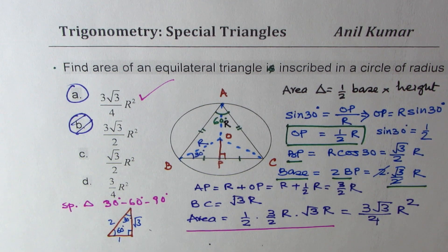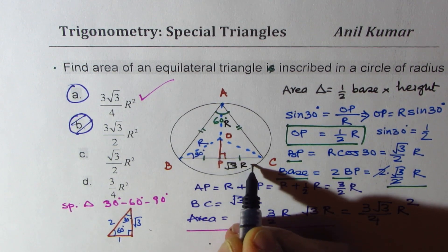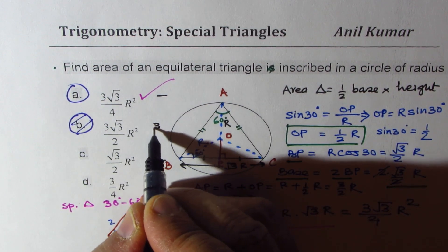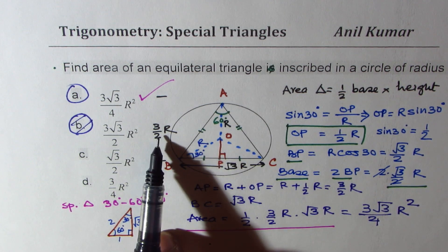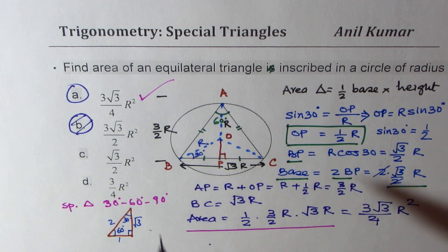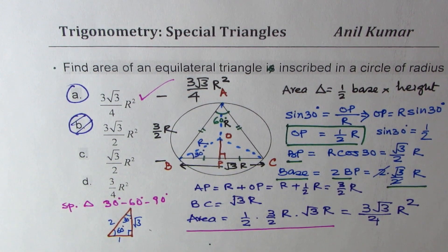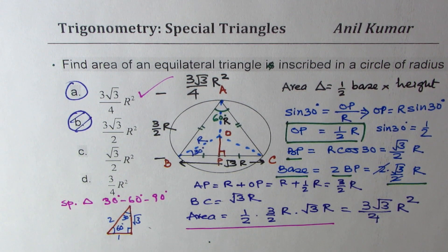So that is how you solve this question. We found that BC, the base, is √3R, and the height is 3R/2, which is R plus R/2. You multiply these two and then divide by 2, giving a factor of 1/4. So the answer is 3√3R²/4. This is an extremely important result. Feel free to write your comments, share your views, and try to remember this answer as you might need it. Thanks for watching and all the best.